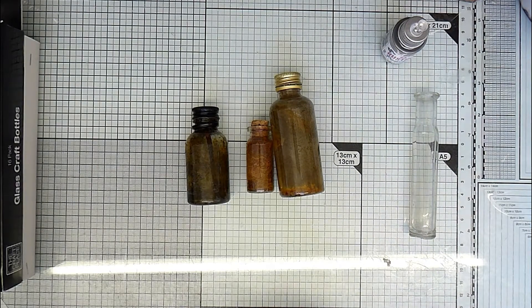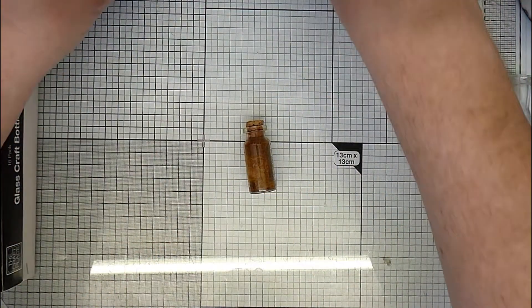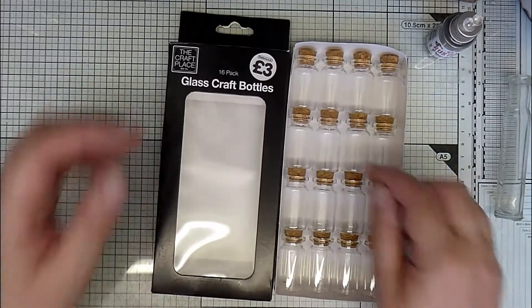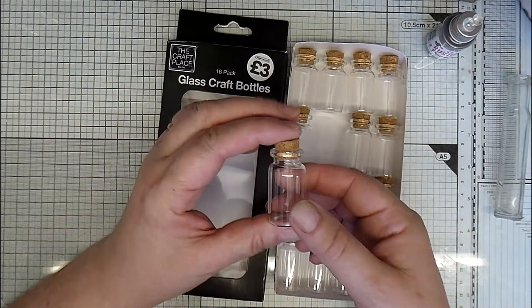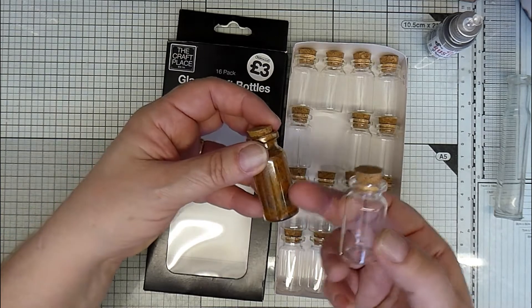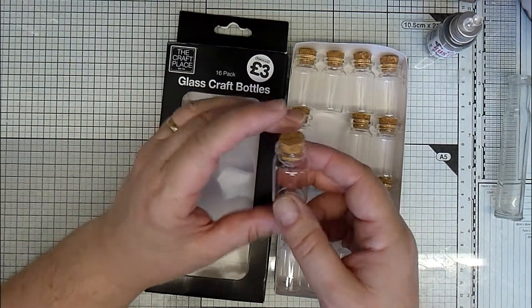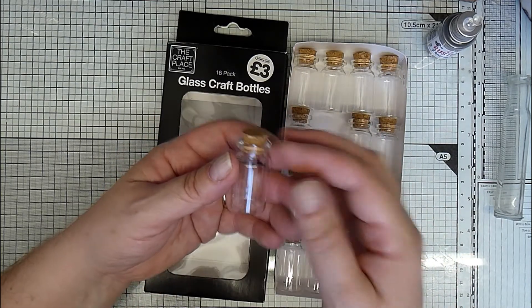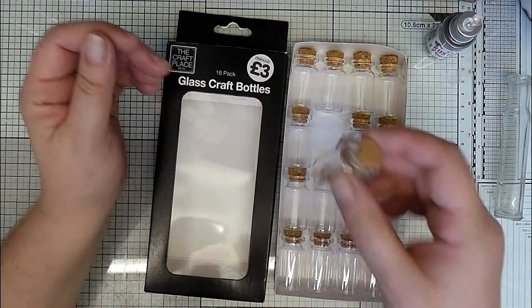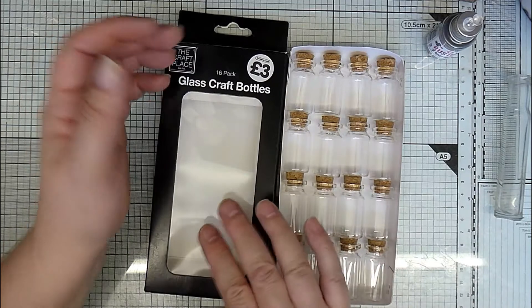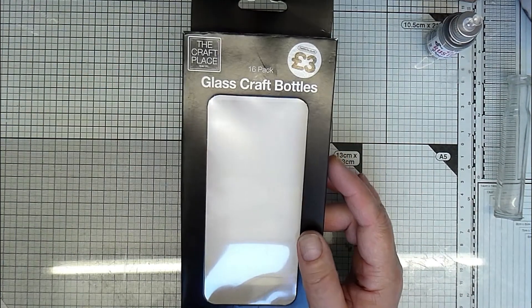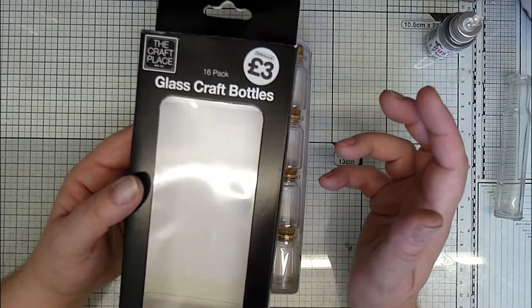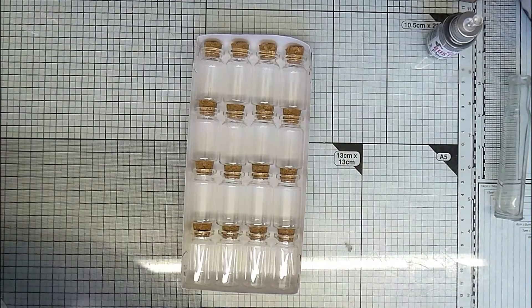While I was out today I did pick up these little glass bottles. I think they're slightly smaller than this one. They've got a little cork stopper. You can use them for all sorts - little scrolls, message in a bottle, all sorts of things. But I'm going to rust some of those. You get them from the Works, a budget craft store in the UK, £3 for 16 bottles. So you'll have a fair few to go at.